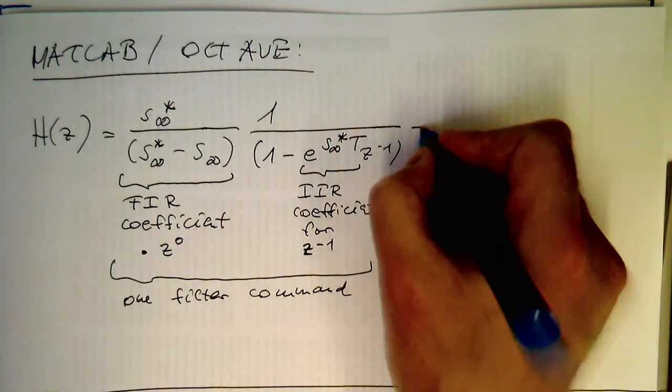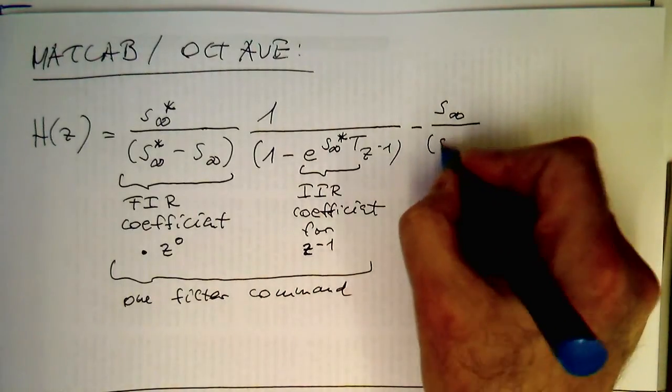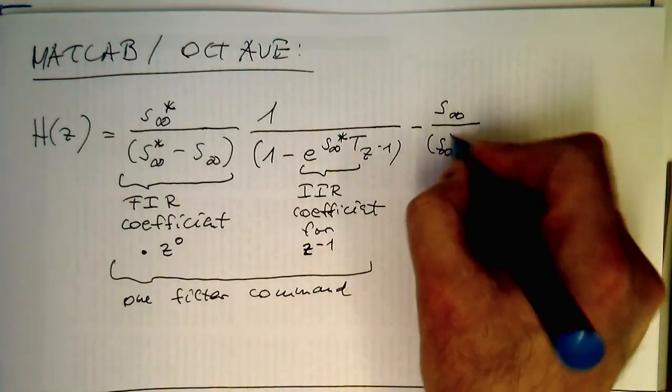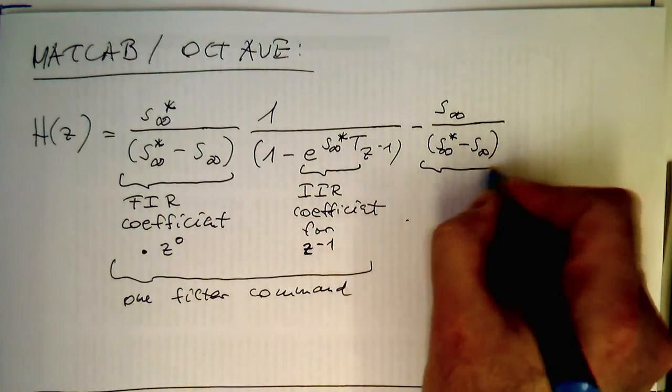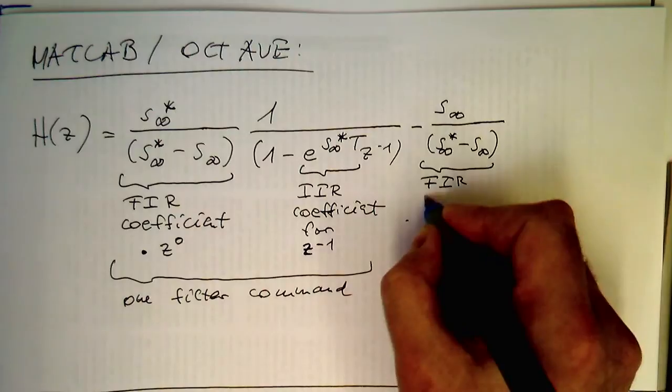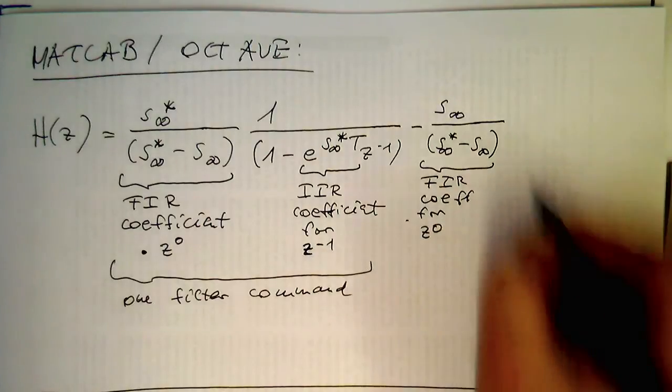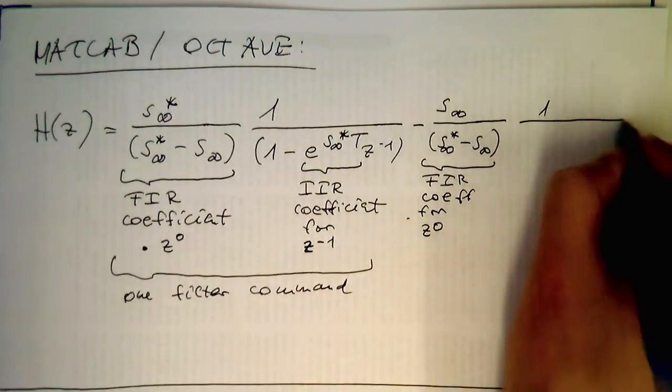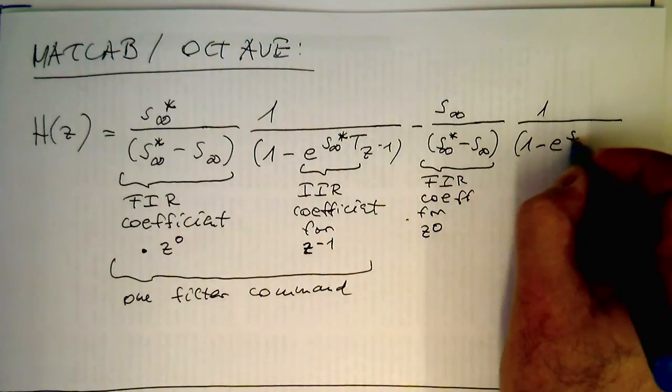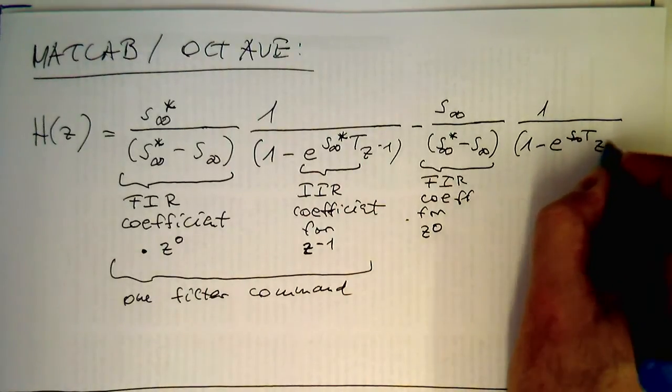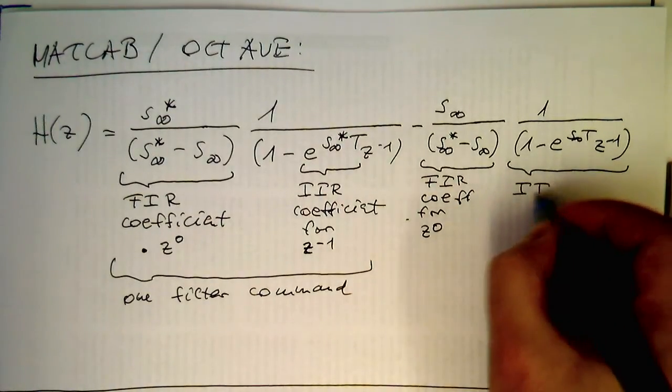And then, the same here is for the second part, S infinity divided by S infinity star minus S infinity, so this again gives us an FIR coefficient for Z to zero, so the first one in the MATLAB convention, and then one minus and then E to S infinity T, Z to minus one. So this gives us here again our IIR coefficient.